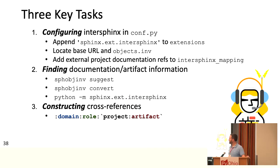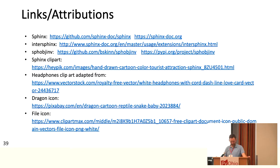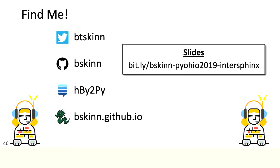Those are the three key tasks. You need to configure your InterSphinx, getting the necessary items into conf.py — that involves some searching to find URLs and objects inventory locations on the remote documentation sets. You then search your objects inventory for information on the artifacts you're trying to document. Then you write your cross-references with that information. And that's all there is to it. I'm not going to go on — these are just attributions for the images I used. I'm around for the rest of the conference and always open to talk about anything, help crafting cross-references, whatever you like. Look me up, give me a ping. Thank you very much.